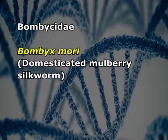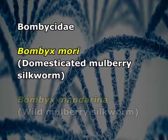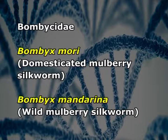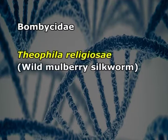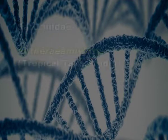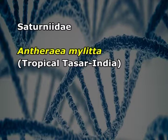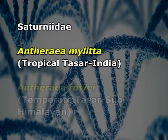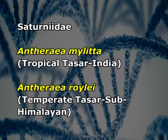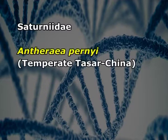Bombyx mori, the mulberry domesticated silkworm, comes under the family Bombycidae. Bombyx mandarina, the wild mulberry silkworm, also comes under Bombycidae. Theophila religiosa is also a wild mulberry silkworm found in the Himalayan region and comes under Bombycidae. Under the Saturniidae family, Antheraea mylitta is the tropical tasar silkworm, Antheraea roylei is the temperate tasar silkworm, and Antheraea pernyi is the temperate tasar silkworm of China.